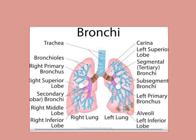The trachea divides into left and right bronchi. If one single branch is a bronchus, when we combine them we have bronchi. So we can see it is divided into left and right — the trachea is divided into left and right bronchi.